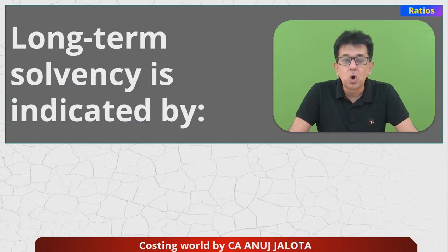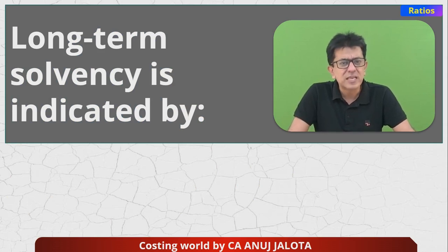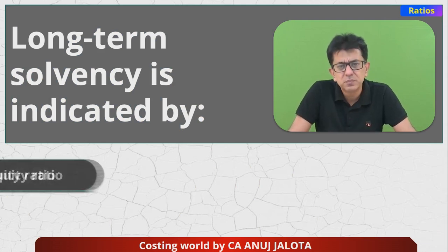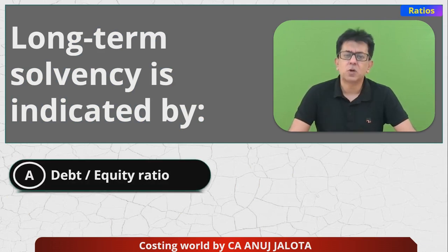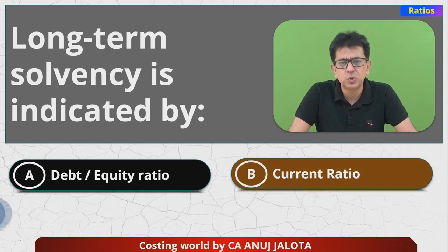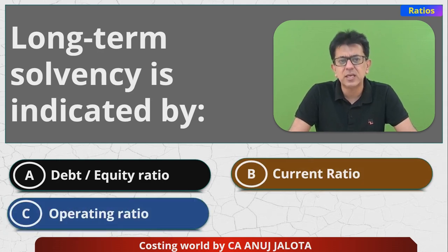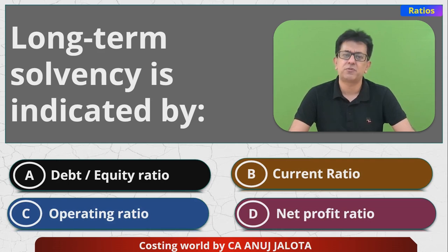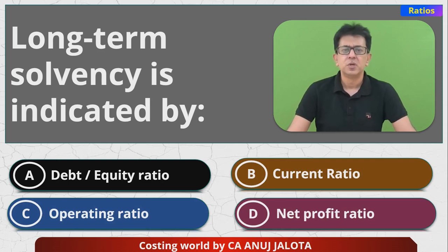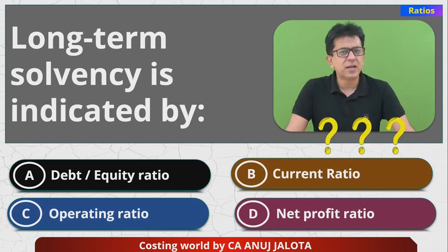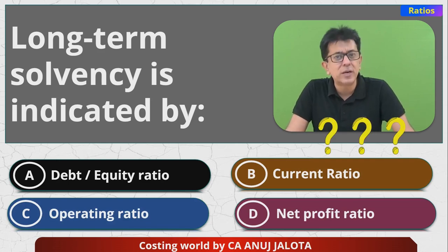So long-term solvency is indicated by — give me the four options please. Option A is debt equity ratio. B is current ratio. C is operating ratio. D in this case is net profit ratio. Think of the correct answer, this is quite easy stuff.